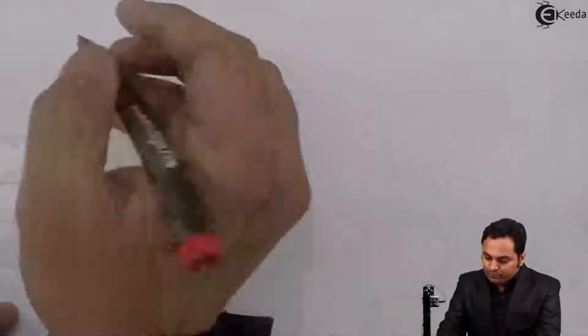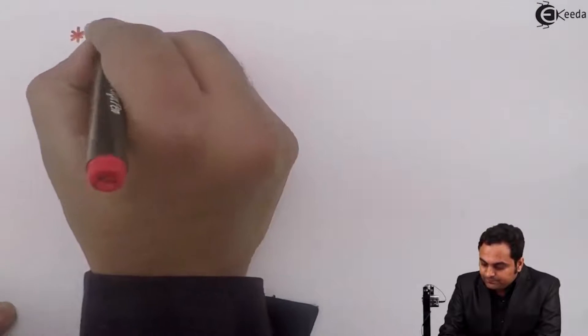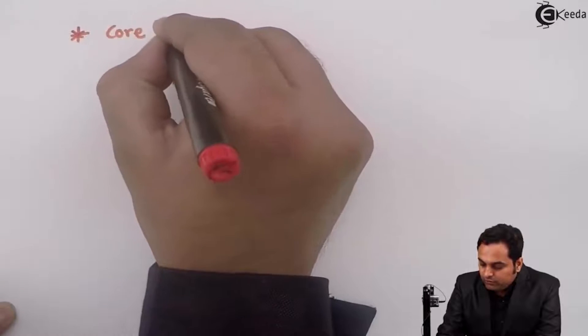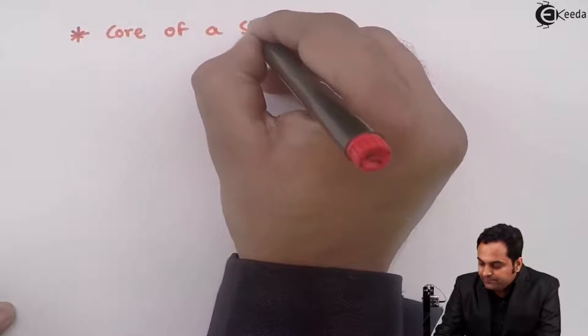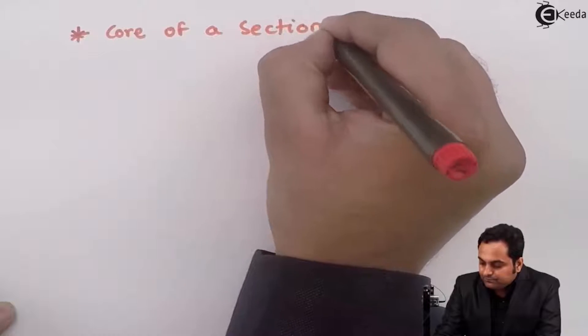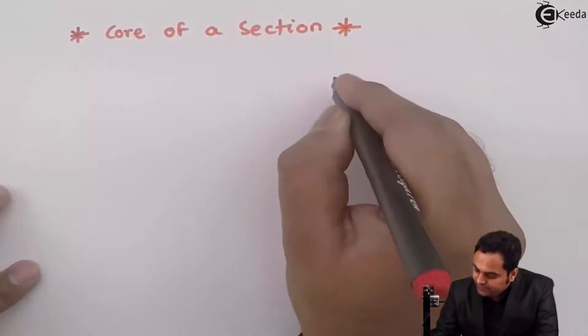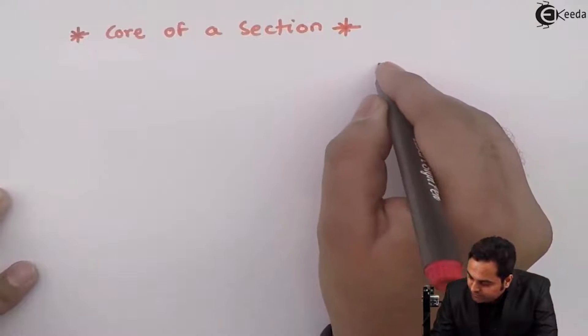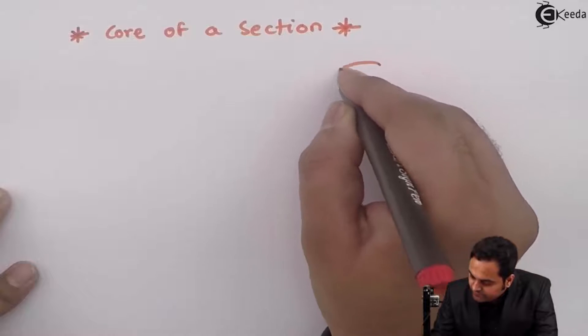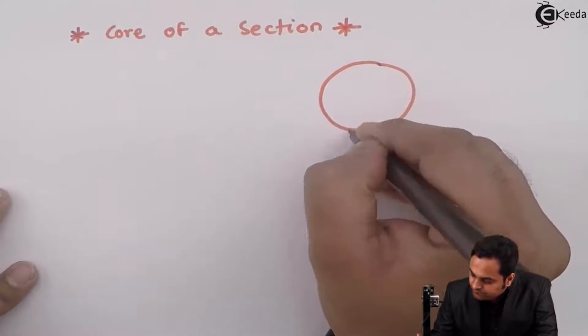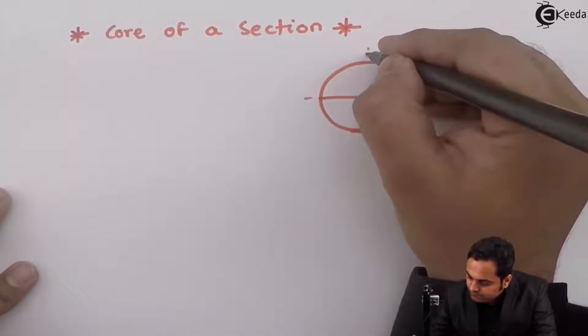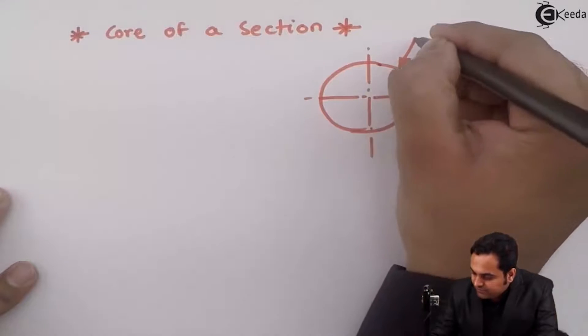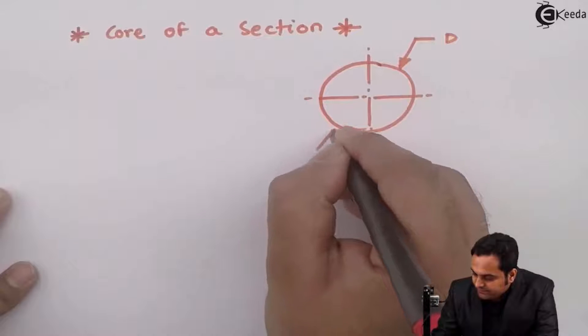Hello friends, in this video we will see what is the core of a section and how to represent it on a diagram. For the core of a section, I am considering a figure in which we have a circular section having diameter as capital D.